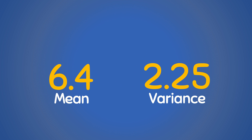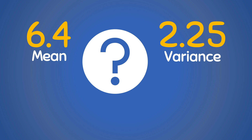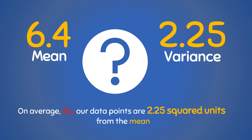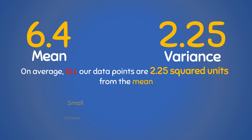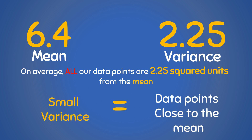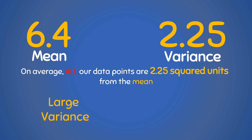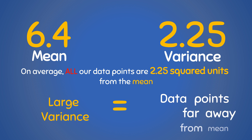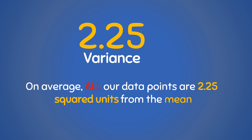So we have a mean of 6.4 and a variance of 2.25. What does this tell us about the data? Variance is a measure of dispersion that tells us how widespread our entire data is from the mean. With a mean of 6.4 and a variance of 2.25, this means that on average, all the data points in our dataset are 2.25 squared units from the mean. A small variance means all the data points are close to the mean value, while a large variance means the data points are far from the mean value. So the variance tells us how much our data points vary from the mean of our data.